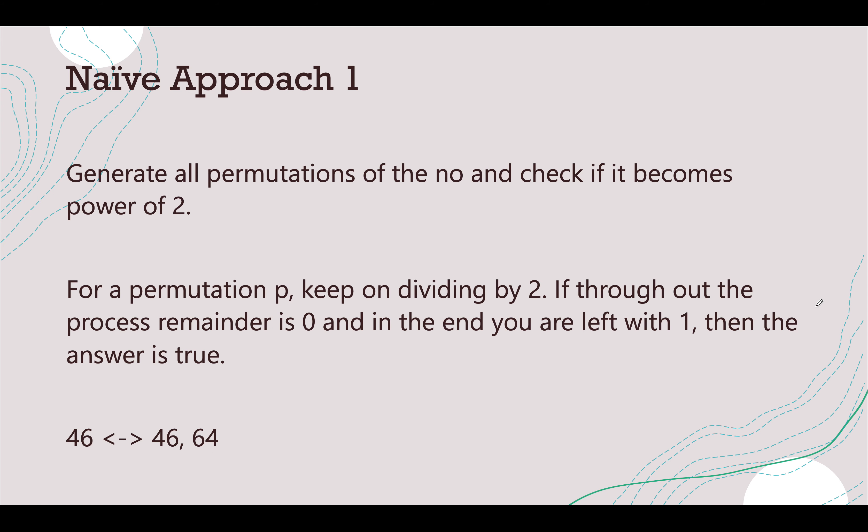Let's talk about the naive approach. The naive approach would be to generate all permutations of a given number and for each number we check whether it's a power of 2 or not. How will we check whether a number is a power of 2? The process is very simple. Let's take 64 as an example. We'll keep on dividing it by 2. Also we'll keep the check whether the remainder throughout the process, till my dividend doesn't become equal to 1, is 0 throughout the process.